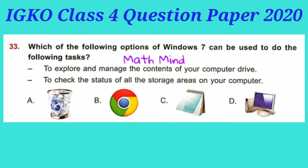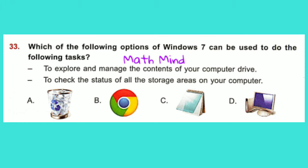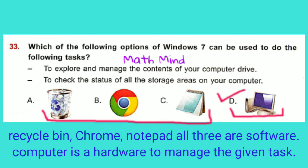Question No. 33: Which of the following options of Windows 7 can be used to do the following tasks? Statement 1: To explore and manage the contents of your computer drive. Statement 2: To check the status of all the storage areas on your computer. Option D is correct.